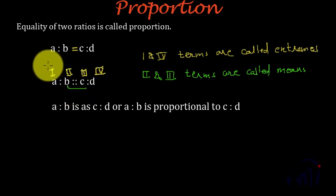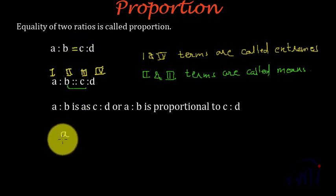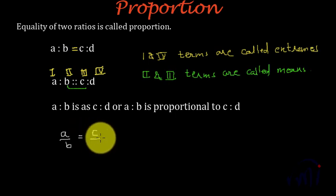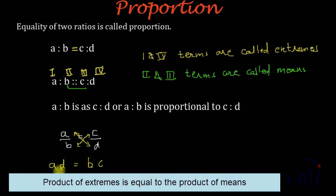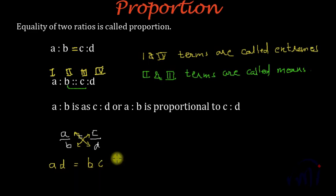So what is the relation between these terms? As we know, A is to B can be written as A by B in the form of a fraction, and this is equal to C by D. A is to B is equal to C is to D. If we cross multiply, A gets multiplied by D which is AD, and AD will be equal to B multiplied by C. That means the product of extremes — the first term and the fourth term — is equal to the product of means, which is B and C.